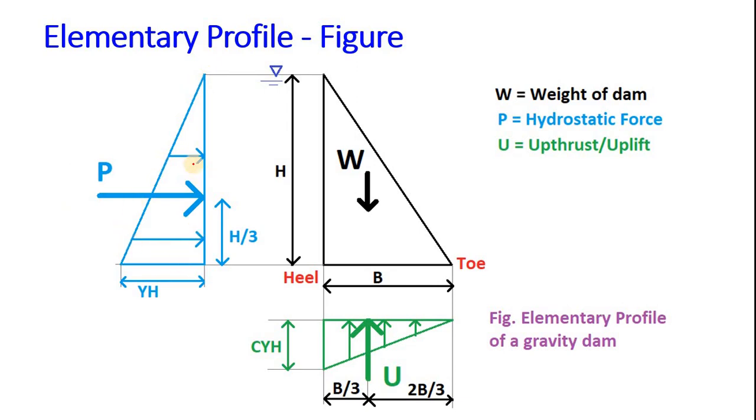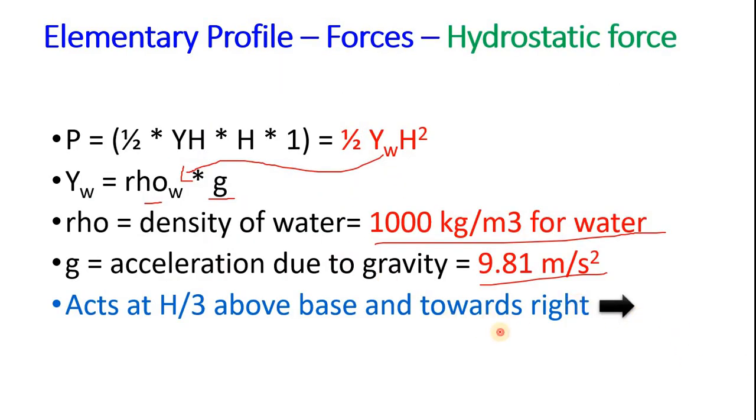This is a triangle and we know the centroid of the triangle above the base is H by 3. So the force acts at point H by 3 above the base and towards the right direction, that is towards the dam. Towards right and H by 3 above the base.